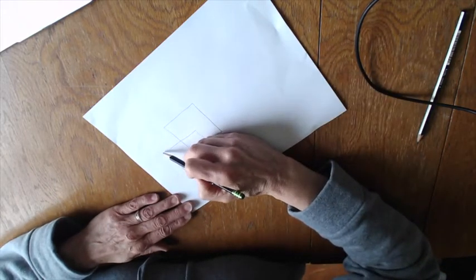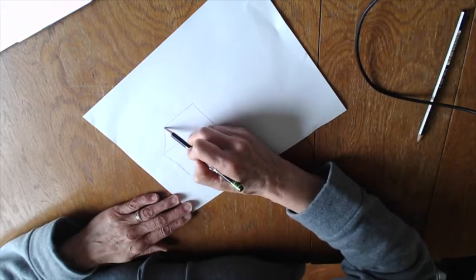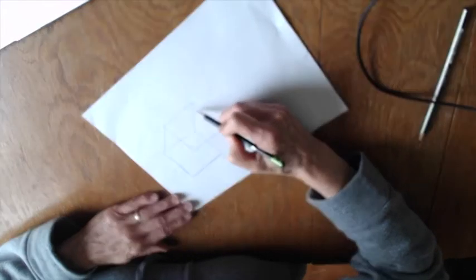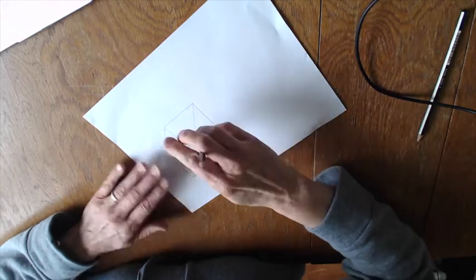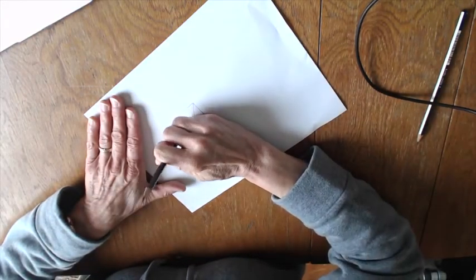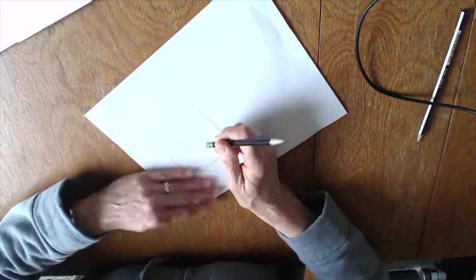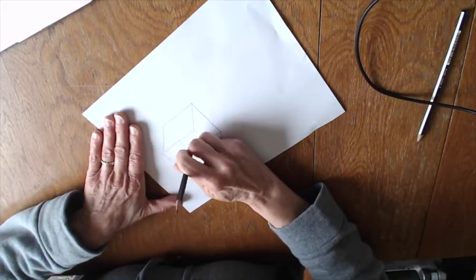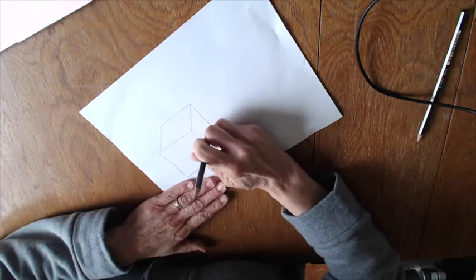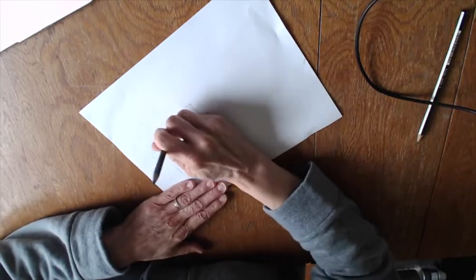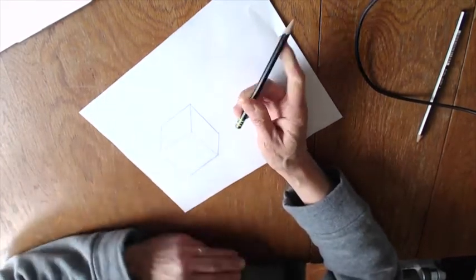Then what I'm going to do is connect the corners, and I'm only going to do these three because I don't see that one. When the box is solid I'm going to erase out these three lines right here.